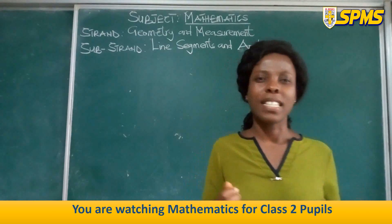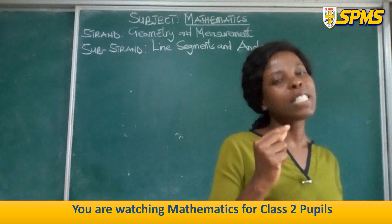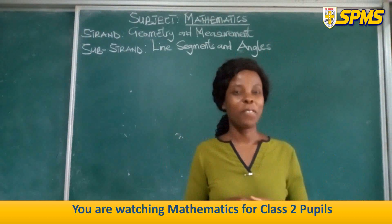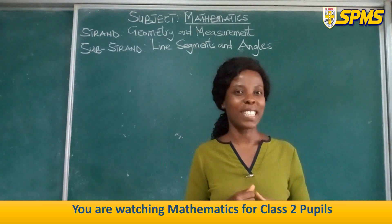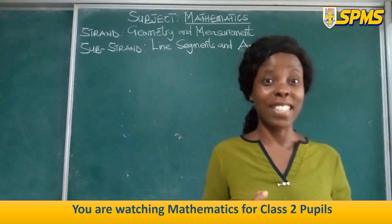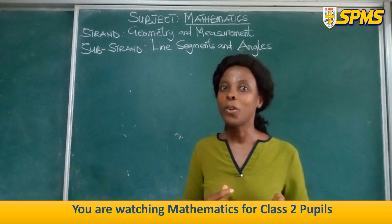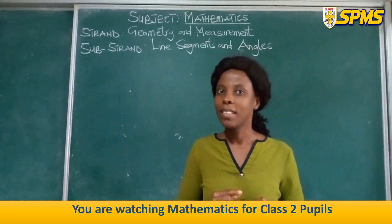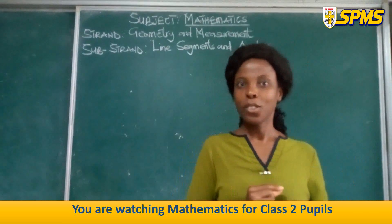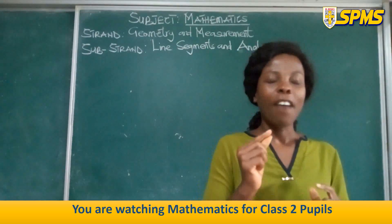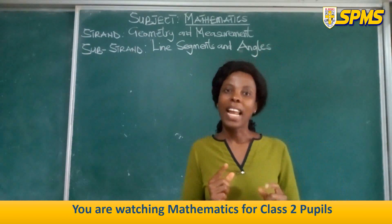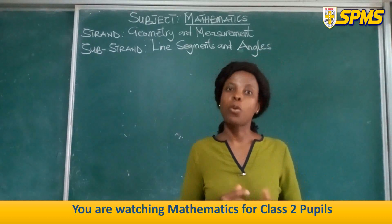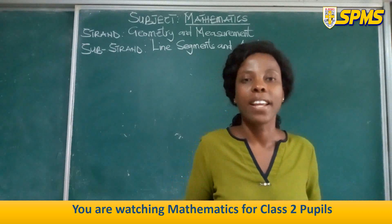What are the main features that help you identify the shapes? Good — the sides and the edges. So that side of a shape is what we call a line. The lines start from one point to the other. And that is what brings us to today's lesson: the line segment.